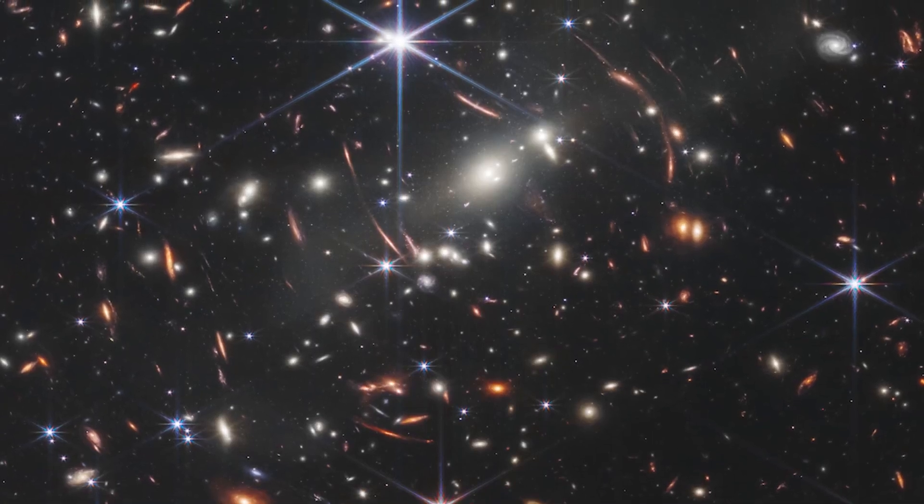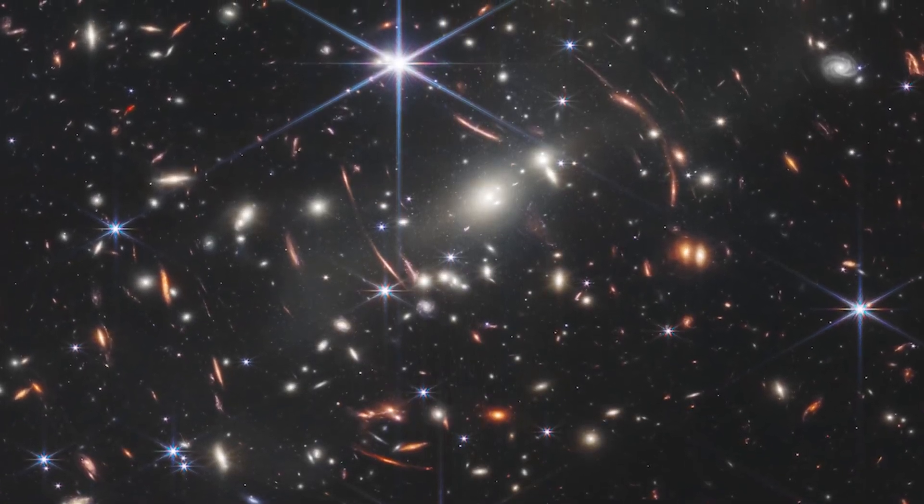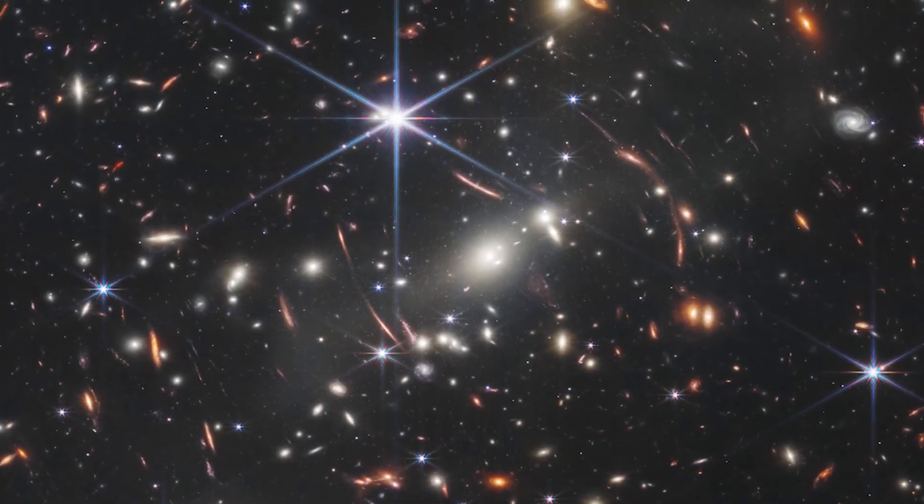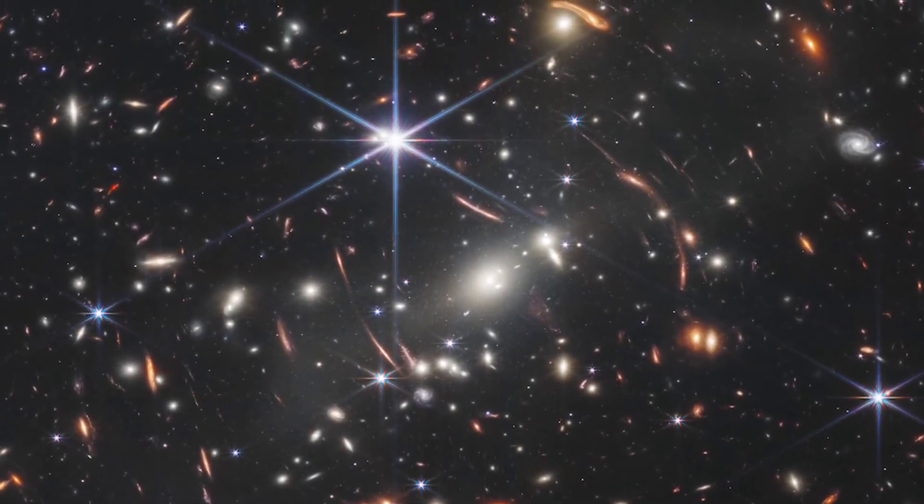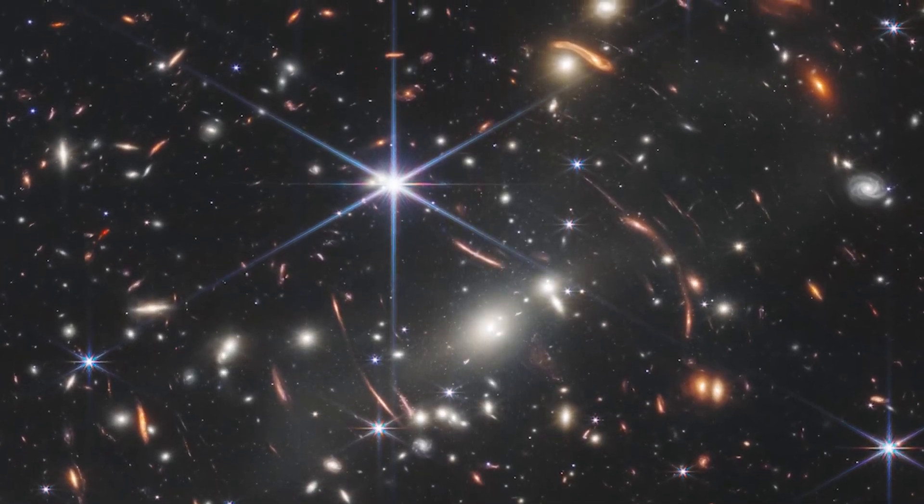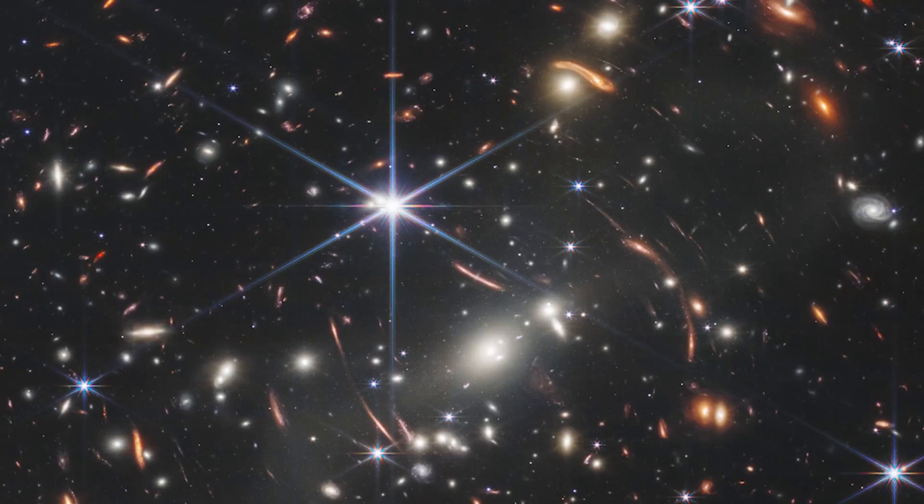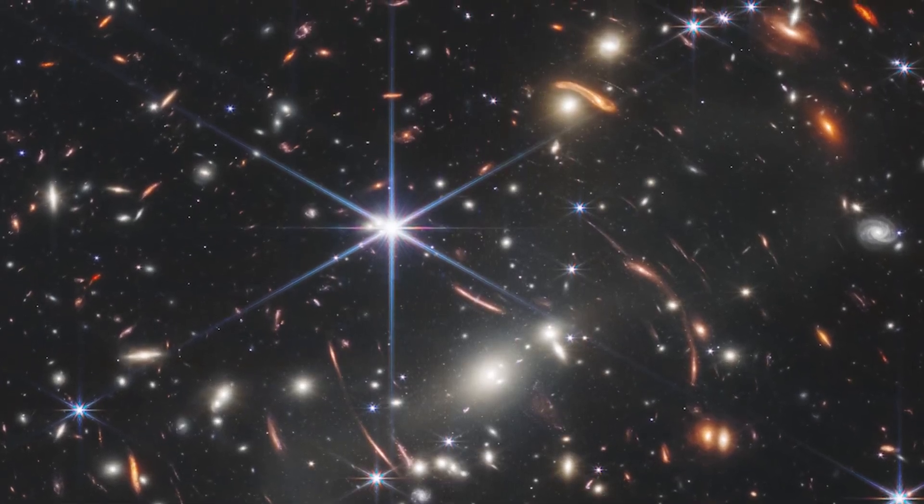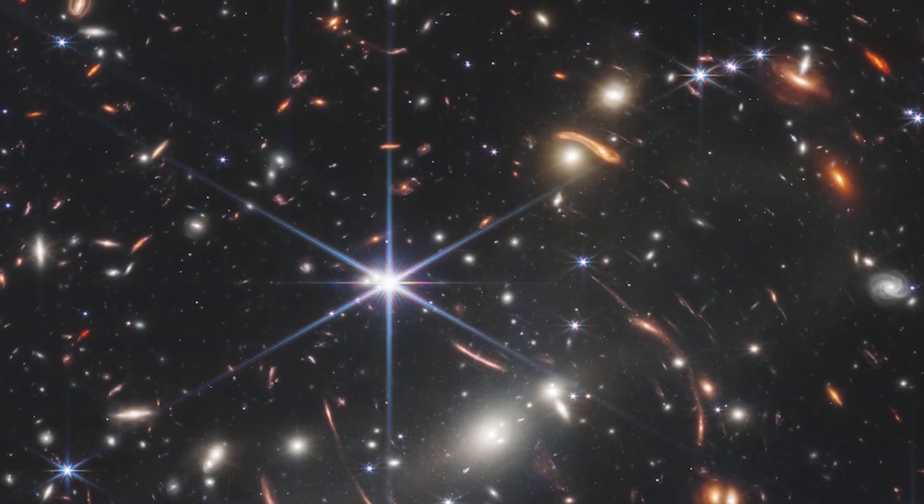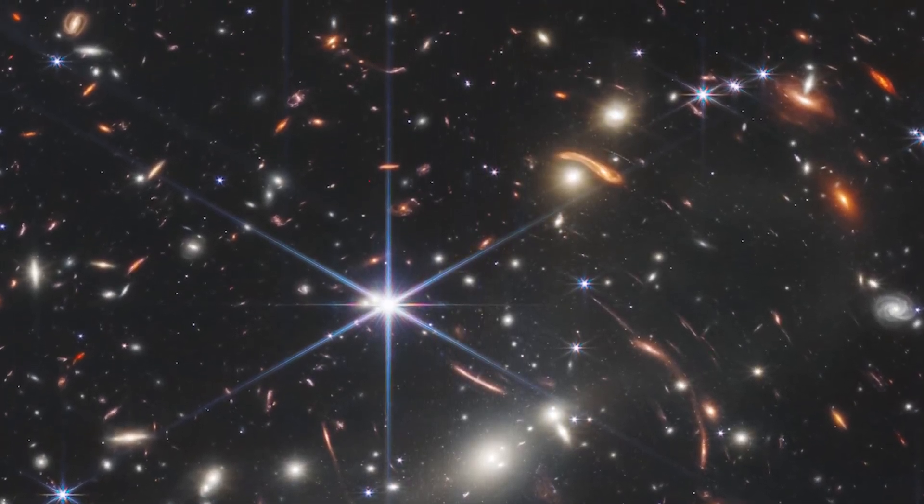This picture of the galaxy cluster is rich with information. Thousands of galaxies, including the tiniest infrared objects yet detected, have emerged in Webb's perspective for the first time. This Deep Field picture was captured by Webb's near-infrared camera as a composite of photos collected at multiple wavelengths.